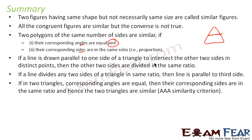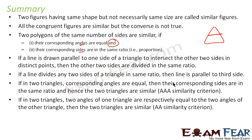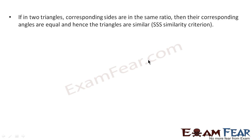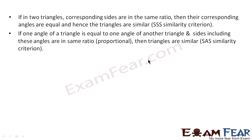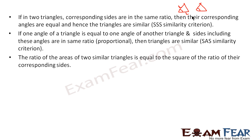If in two triangles corresponding angles are equal, then their corresponding sides are in the same ratio — they are similar by AA similarity, since the third angle must also be equal. Also, if all three corresponding sides are proportional, then the triangles are similar by SSS. If one angle of a triangle equals one angle of another and the two included sides are proportional, then they are similar by SAS criteria.